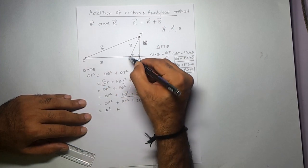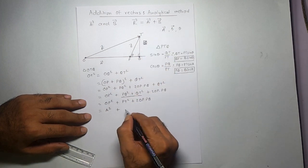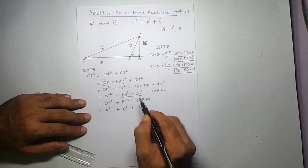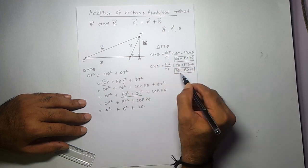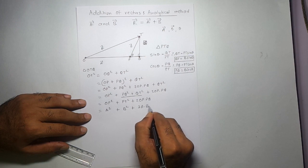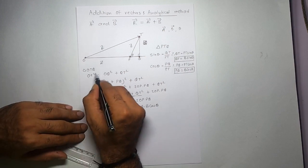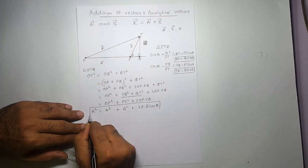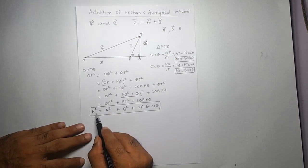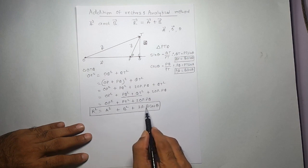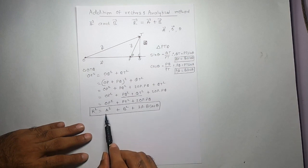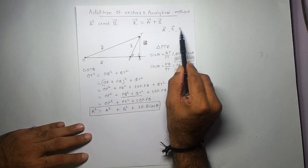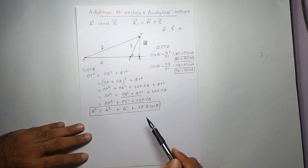Now PQ² + QT² equals PT², which is the magnitude of vector B squared, so I write B². Then 2·OP·PQ becomes 2·a·b·cos theta, since OP is vector A and PQ is B·cos theta. And OT is the resultant R, so I get R² equals A² plus B² plus 2AB·cos theta. This is the equation for the magnitude of the resultant.